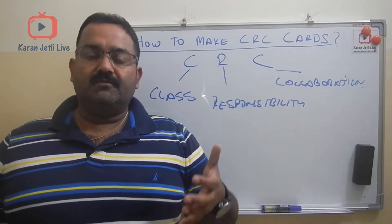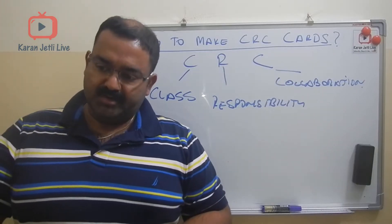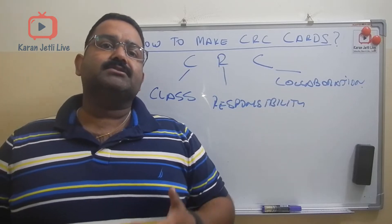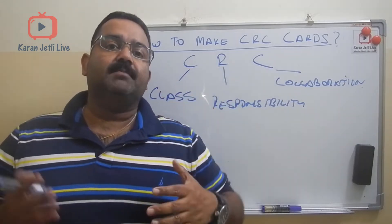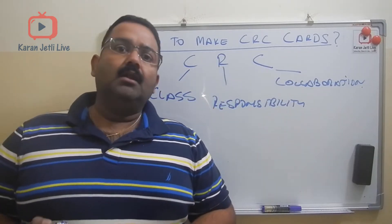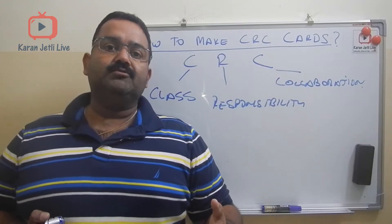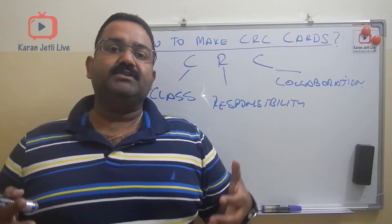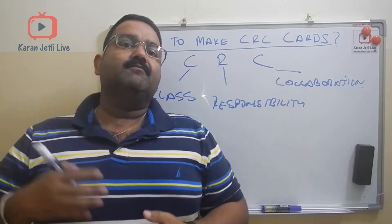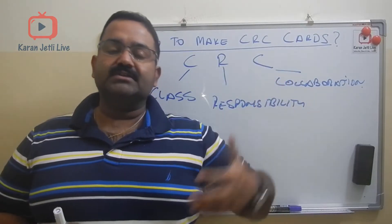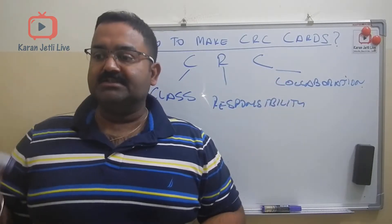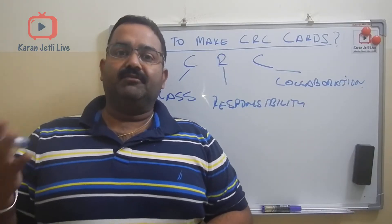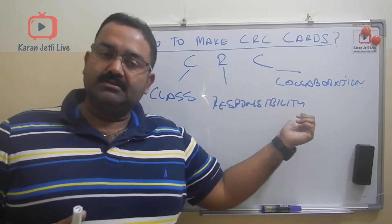In modern system analysis and design, we build our system use case by use case. To carry out one use case, there are different classes which need to collaborate with each other so that the use case can be achieved. So the CRC card represents that information: the classes, their responsibilities, and their collaborations.